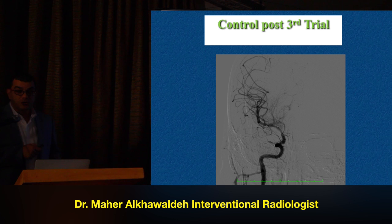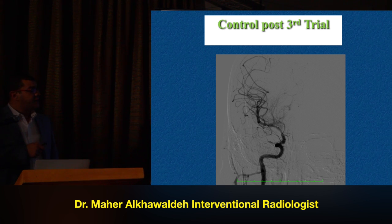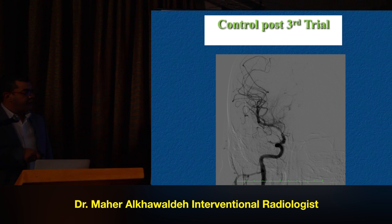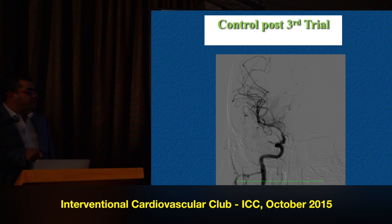We did first two trials by mechanical thrombectomy using a stent. After the third attempt, we can see we have irregularity in the wall of the artery. We are still deploying the stent, but we still don't have the right anterior cerebral artery. However, we can see some territory of the thalamostriate artery.